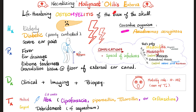Usually the patient is elderly, diabetic, and poorly controlled. Severe ear pain, redness, hotness, swelling, drainage of all kinds of gunk. You'll see granulation tissue at the floor of the external ear canal. The organism is Pseudomonas — Pseudomonas, hands down. Very important. Diagnosis is clinical; radiological imaging can help. Biopsy is usually not needed but is very accurate, since this is osteomyelitis.